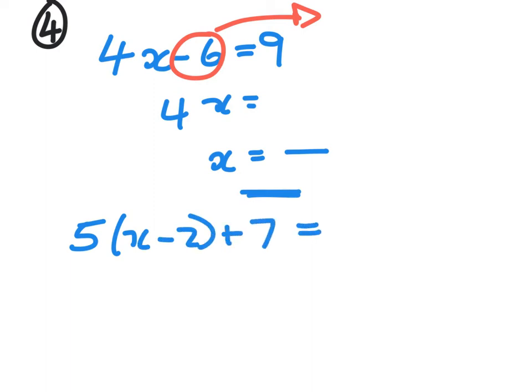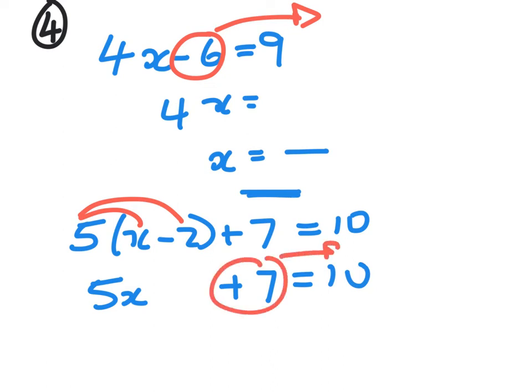The second one: 5 bracket x take away 2 plus 7 equals 10. Remember we do 5 times x, 5 times the 2, to give us 5x something, and then it's add 7 equals 10. And then just like the one above, the 7 has to go over, this number has to go over, and then you work out what x is. Again, it'll be a fraction.